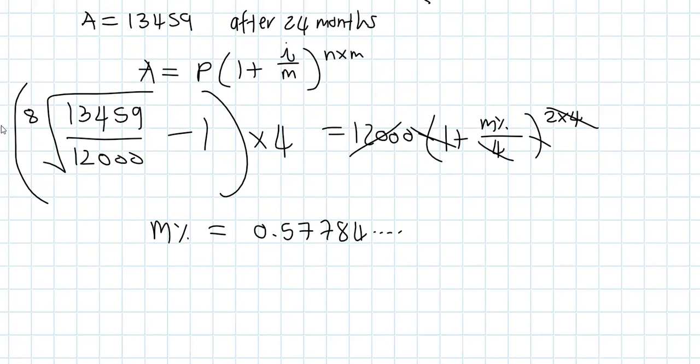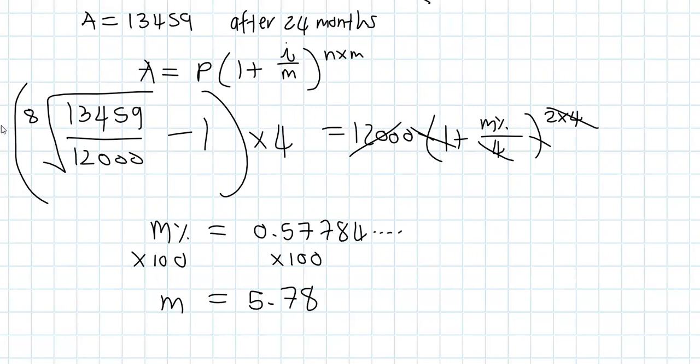The last step: we want a percentage, so since this is m percent we multiply both sides by 100. On the calculator just times by 100, and m is equal to 5.78 percent — 5.78% to two decimal places.